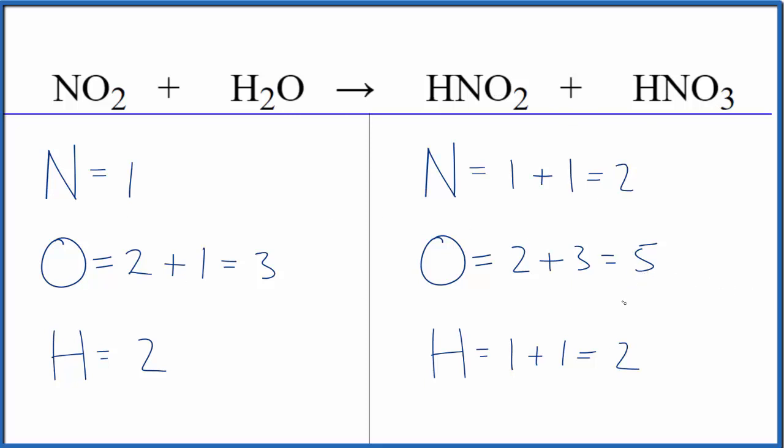I like to leave oxygens till last. Let's balance the nitrogens. If we put a 2 in front of the nitrogen dioxide, one times two balances the nitrogen atoms. Let's update the oxygens - we have two times two, that's four plus one here, giving us five.